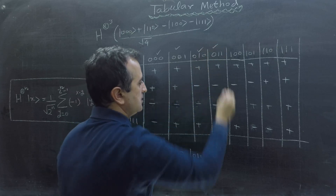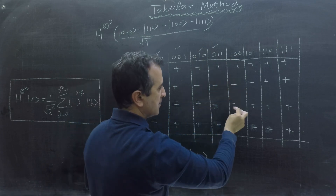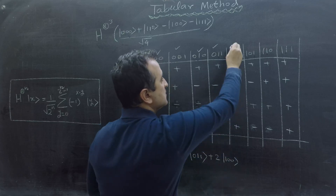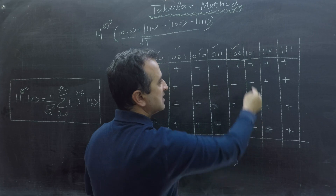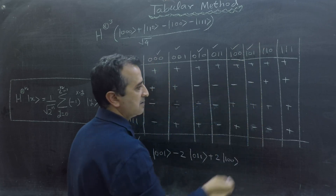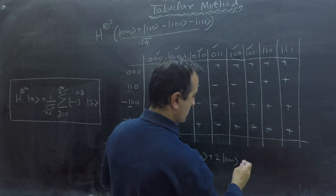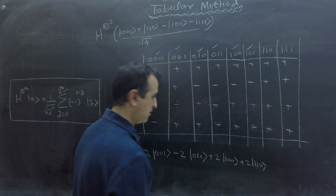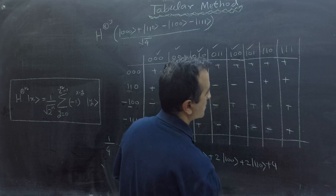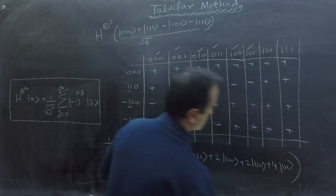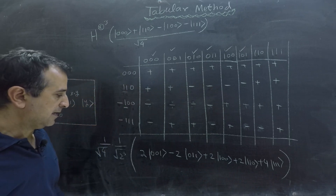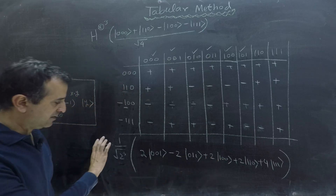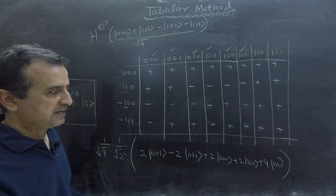Continuing: for 1 0 0 the result is plus 2 ket 1 0 0. For 1 0 1 everything cancels. For 1 1 0 the result is plus 2 ket 1 1 0, and for 1 1 1 the result is plus 4 ket 1 1 1. That is the final result. I can take 2 as a common factor, which then cancels with the 1 over square root of 4, simplifying the expression.